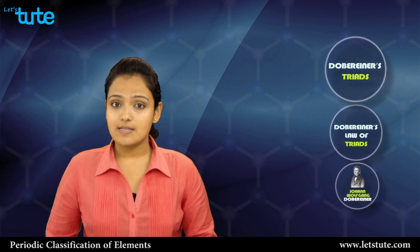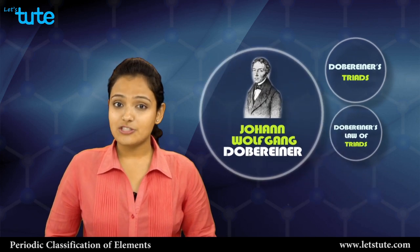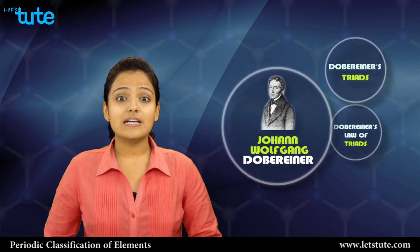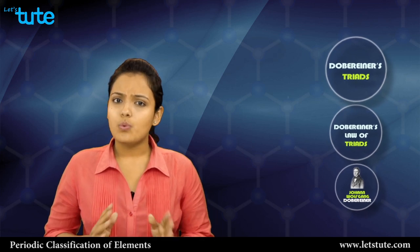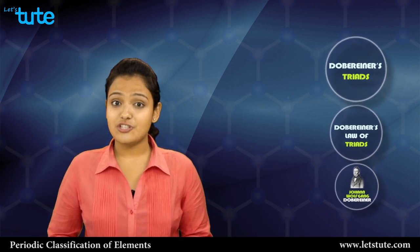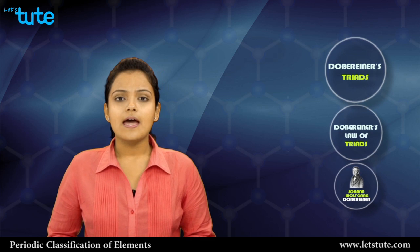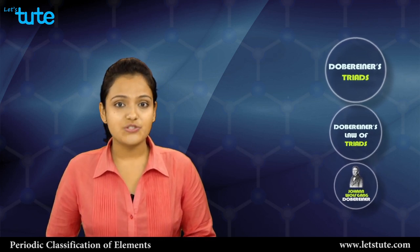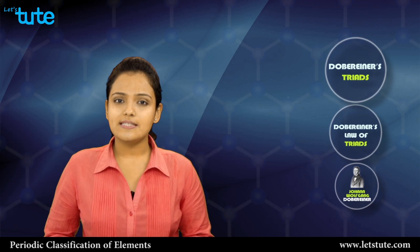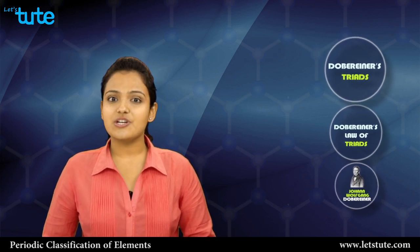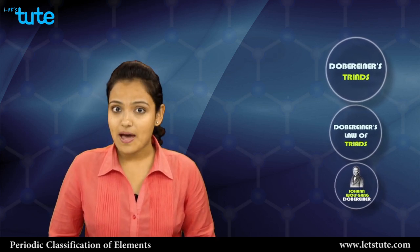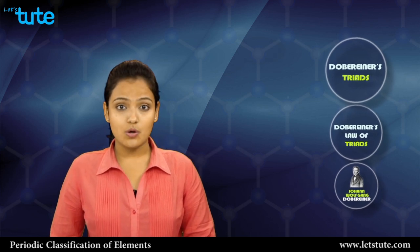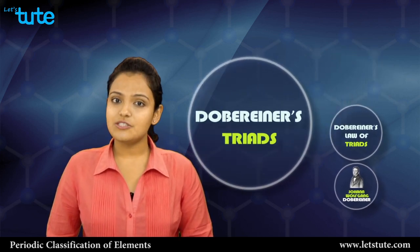A German chemist named Johann Wolfgang Dobereiner came up with the idea to classify elements which have similar properties into clusters of three. These clusters of three were known as triads. Since this was Dobereiner's idea to classify these elements into triads, this type of classification is known as Dobereiner's Triads.